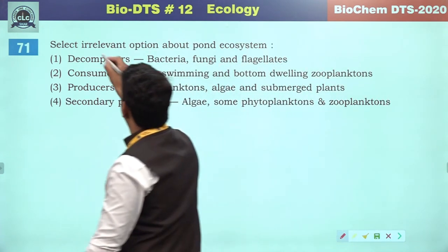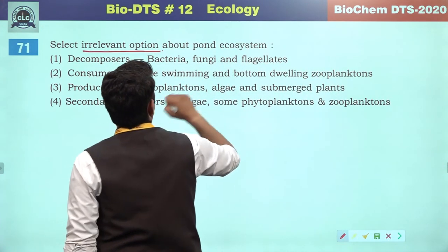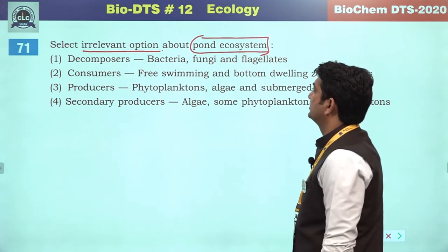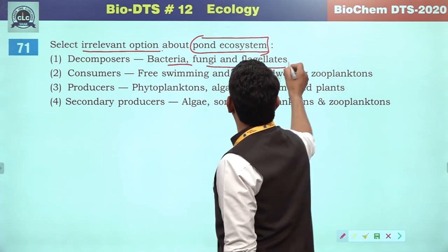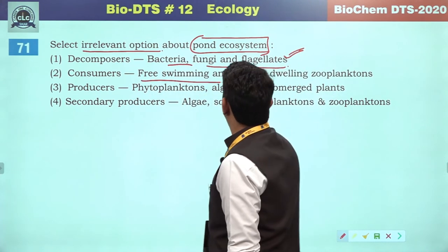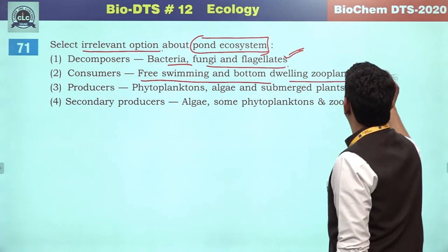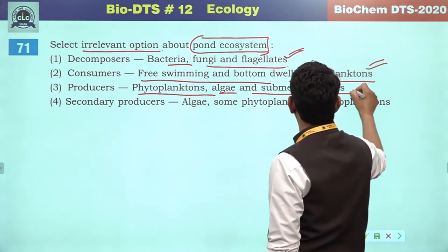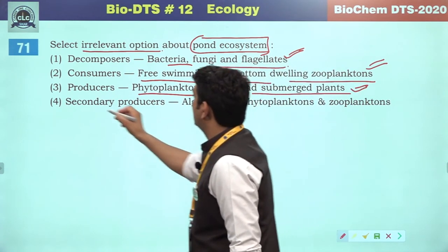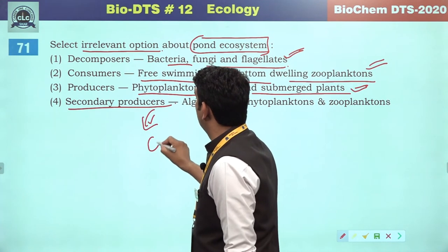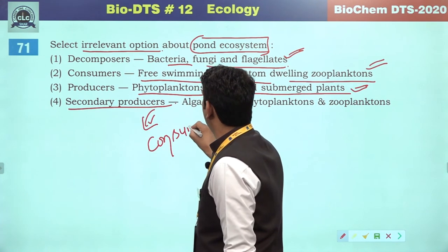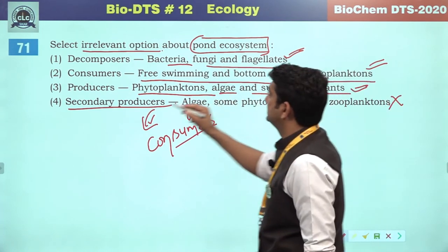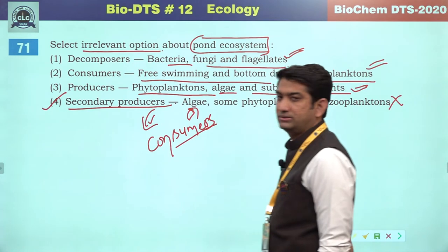Select the irrelevant option about pond ecosystem. Decomposers include bacteria, fungi and flagellates. Consumers include free and bottom-dwelling zooplanktons. Producers include phytoplanktons, algae and submerged plants. Secondary producers — they have mentioned consumers — the first is the incorrect reference. So the fourth will be the irrelevant option.